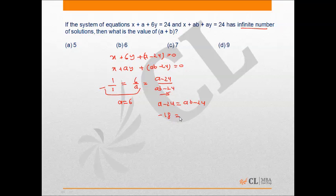So minus 18 is equal to 6b minus 24. That is 6b equals 6, b equals 1. Summation of a and b is 6 plus 1, that is 7, option C.